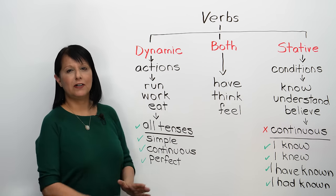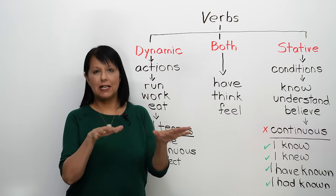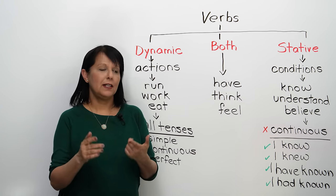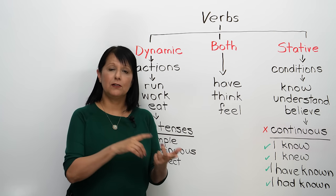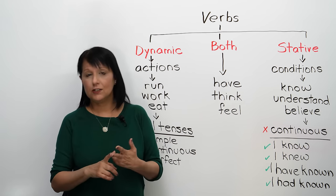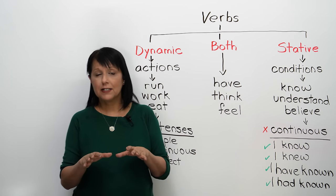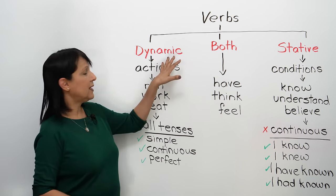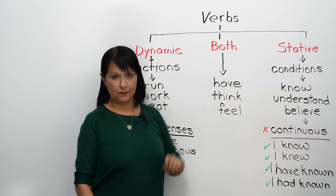So, first of all, when we're talking about verbs in English, there are many ways to classify them. You probably know some of these already, like, for example, we talk about verbs as being regular and irregular, or transitive and intransitive. And today, what we'll be looking at is the fact that verbs are also divided according to whether they are dynamic or stative.